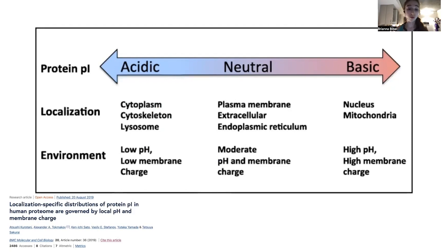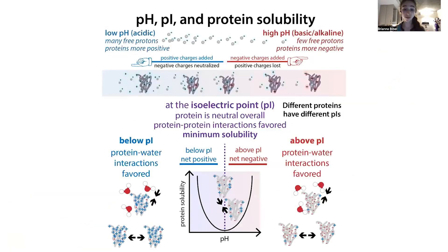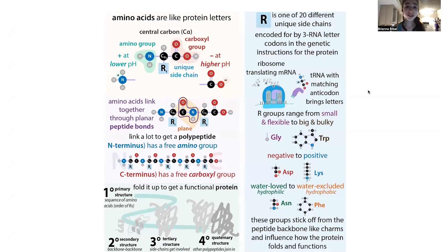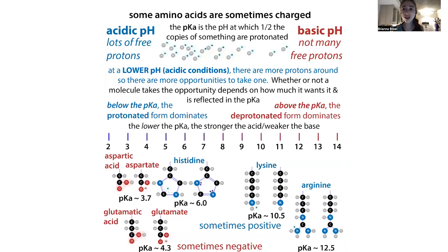Let's get into the concept of PI — the isoelectric point — the pH at which a protein is neutral overall. There will be parts of it that are positively charged and parts that are negatively charged. These charges come from individual amino acids, the protein letters. Proteins are long chains of these letters folded up, and different proteins have different numbers. The amino acids that can be positively charged are called basic residues, and those that can be negatively charged are called acidic residues.